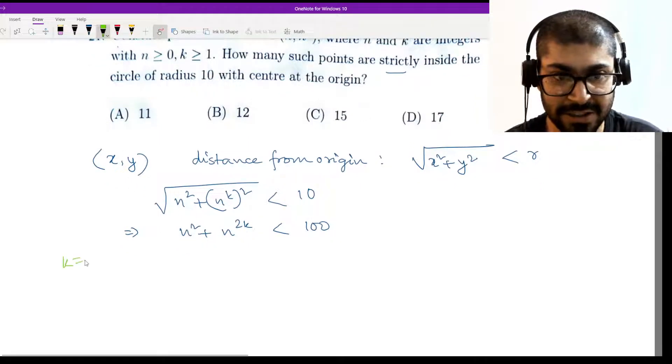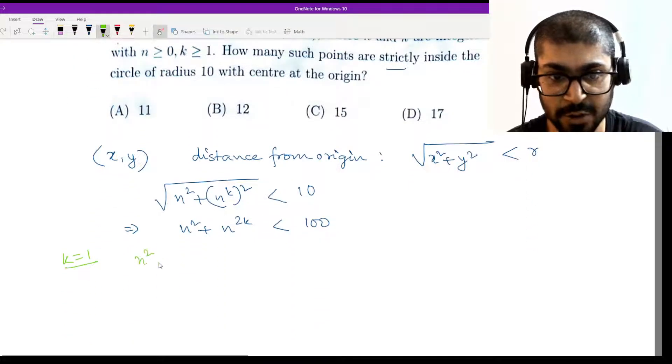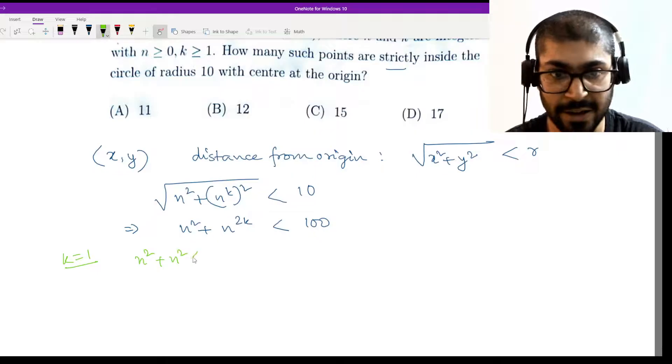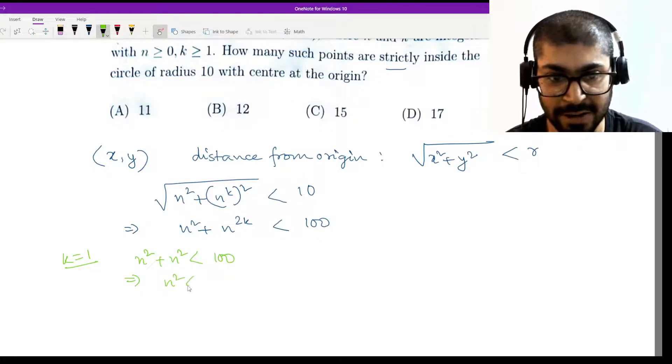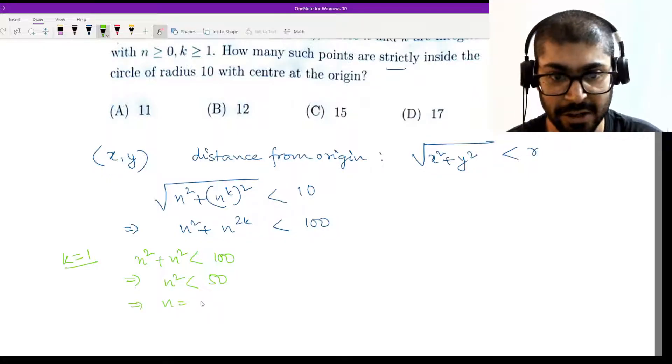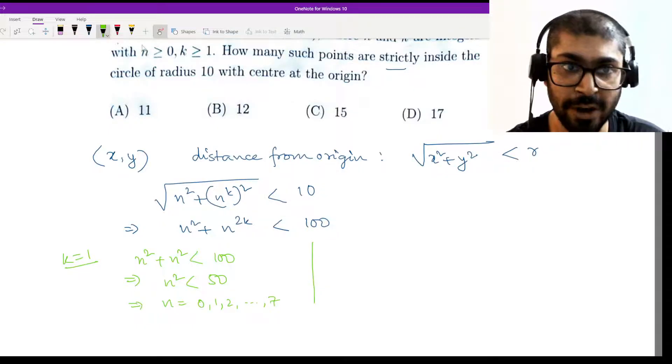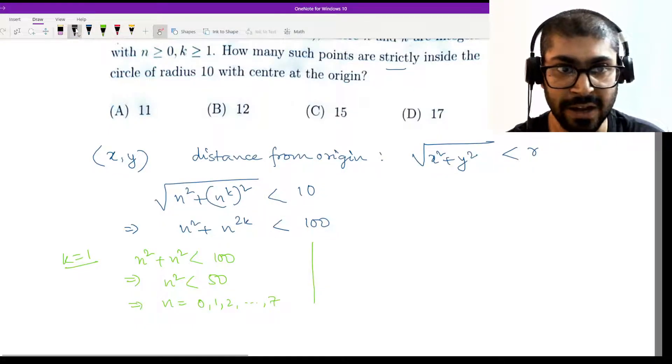Now we break them down into a few cases. The first case will be k equal to 1, because k starts from 1. At k equal to 1 I have n² + n² less than 100, which gives me 2n² less than 50, or n² less than 50. So n is 0, 1, 2, ..., 7.